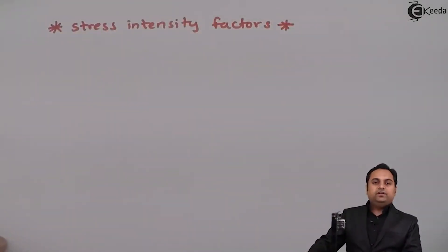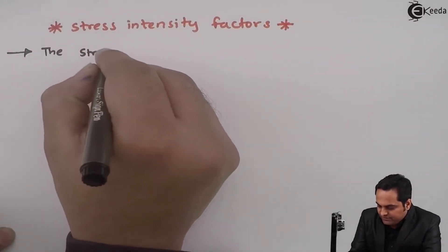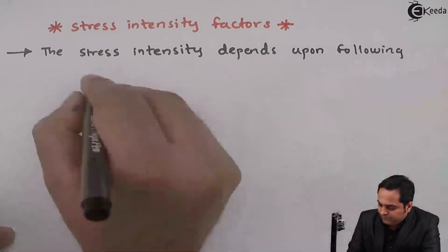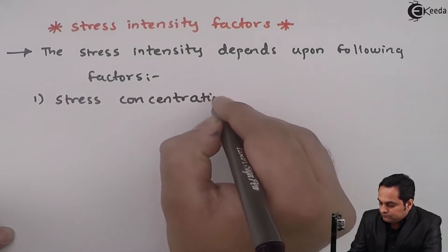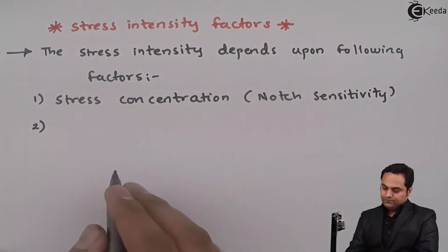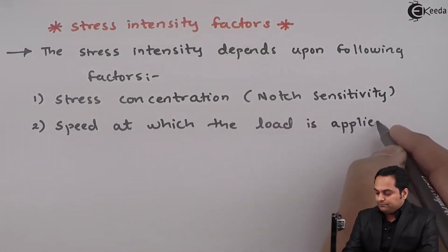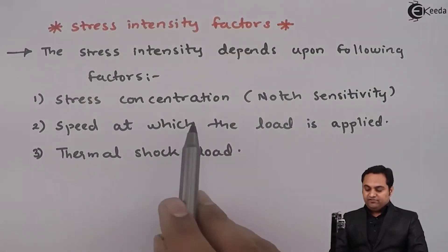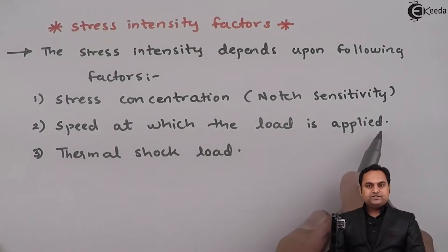Hello friends. In this video we are going to see various stress intensity factors. Stress intensity depends upon the following factors: the first one is stress concentration, also called as notch sensitivity; second, the speed at which the load is applied; and third, thermal shock load.